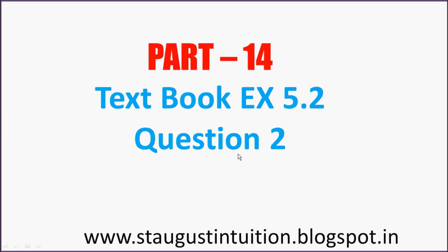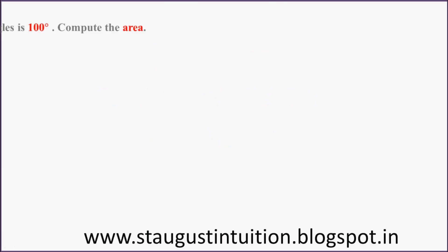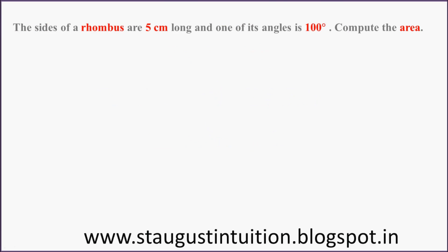Please visit Part 1 to 13 before watching this video. The question is: the sides of a rhombus are 5 cm long and one of its angles is 100 degrees. Compute the area.